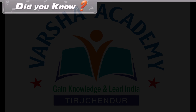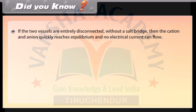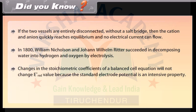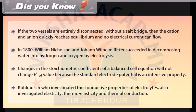Did You Know: If two vessels are entirely disconnected without a salt bridge, cations and anions quickly reach equilibrium and no electrical current can flow. In 1800, William Nicholson and Johann Wilhelm Ritter succeeded in decomposing water into hydrogen and oxygen by electrolysis. Changes in stoichiometric coefficients of a balanced cell equation do not change E° because standard electrode potential is an intensive property. Kohlrausch also investigated elasticity, thermoelasticity, and thermal conduction.